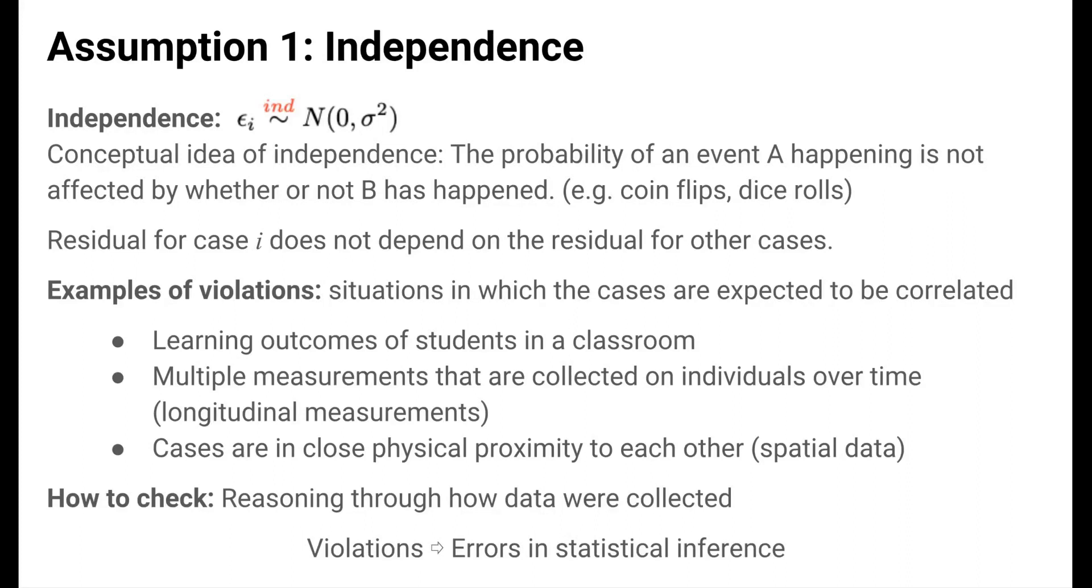So in practice, tracking this assumption involves reasoning through how the data reflected. The consequence of the violation is that we'll make errors in the decisions that we make through statistical inference. That is, we'll make wrong decisions based on p-values and confidence intervals. When this assumption is violated, we need to use specialized statistical methods that are beyond the scope of this course, but are covered in courses that deal with correlated data.